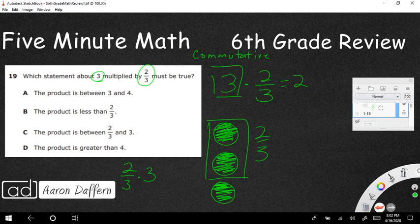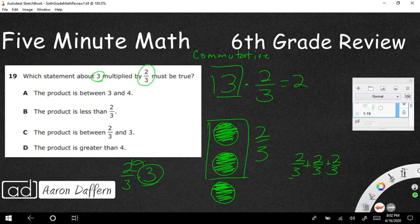And so we're going to flip this. We're going to say two-thirds times three. That means there's three groups of two-thirds, like it's repeated addition. So we're going to say two-thirds plus two-thirds plus two-thirds. Because you can say three groups of two-thirds, it's going to be two-thirds plus two-thirds plus two-thirds.